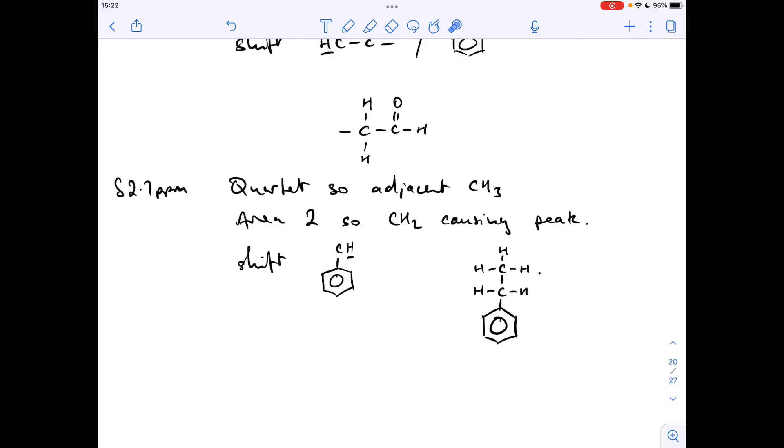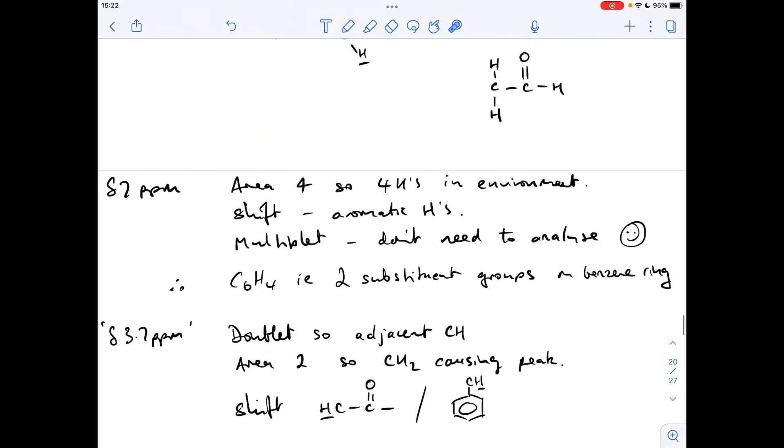And then while I've got this structure on the screen, we can talk about the other peak. So we've just talked about those protons there. So if you think about these protons, because these haven't featured at all yet, these would have an area of 3. They would be split into a triplet, because they're adjacent to a CH2 group, and they're just in the H to C to R environment.